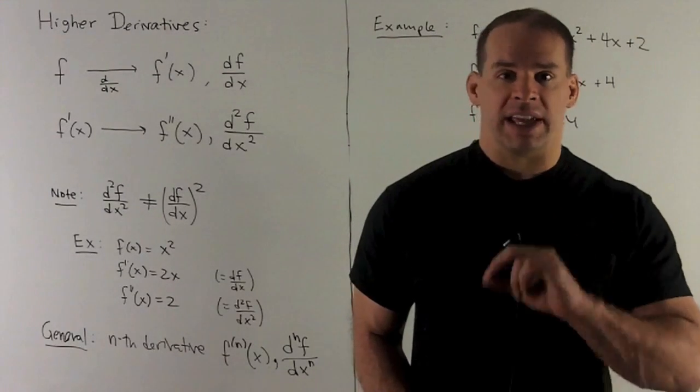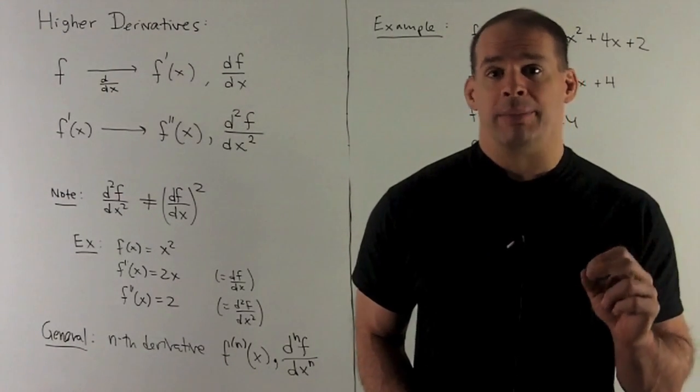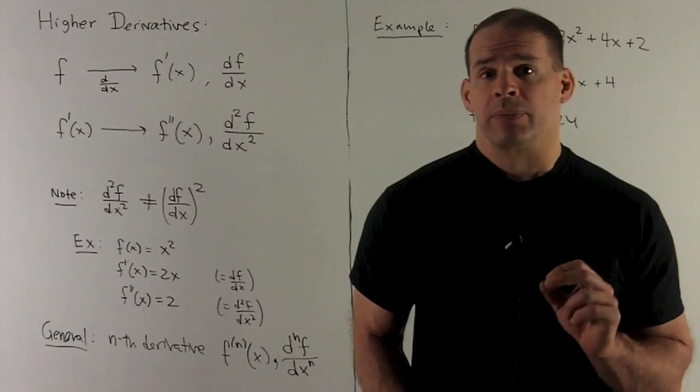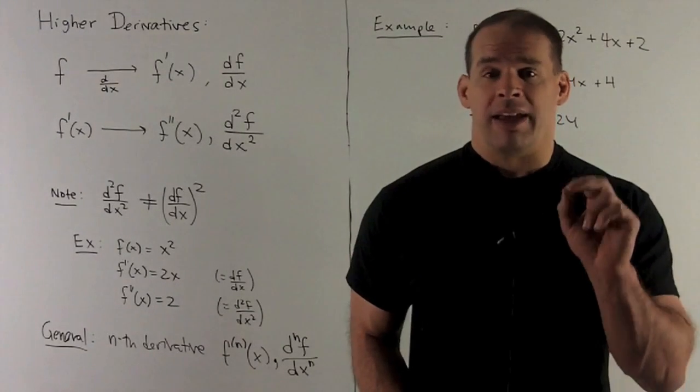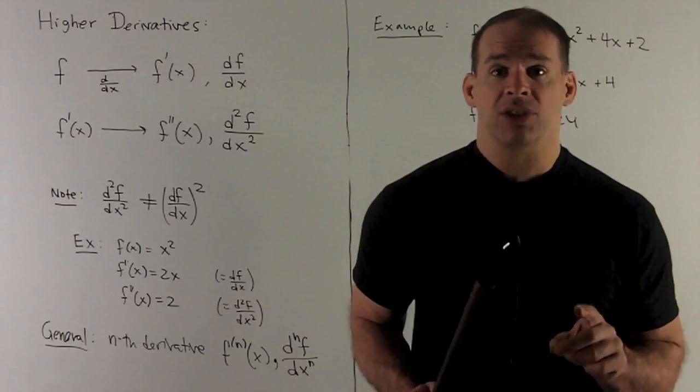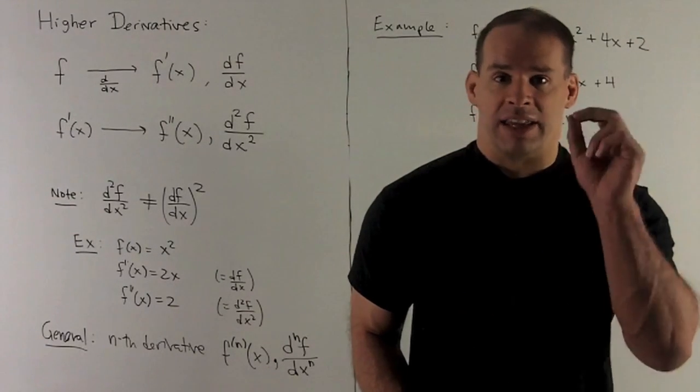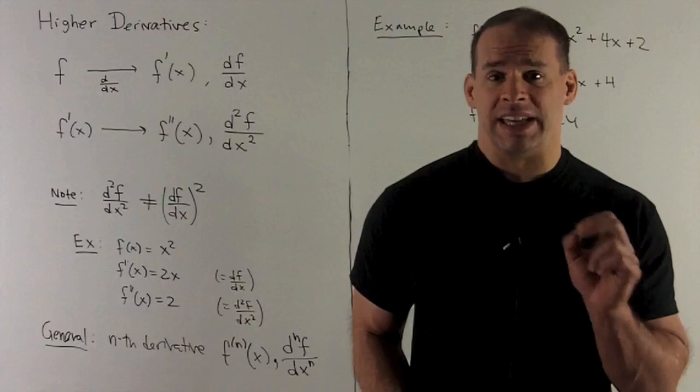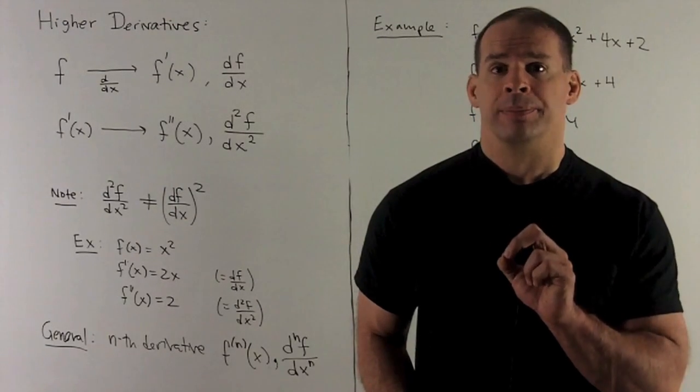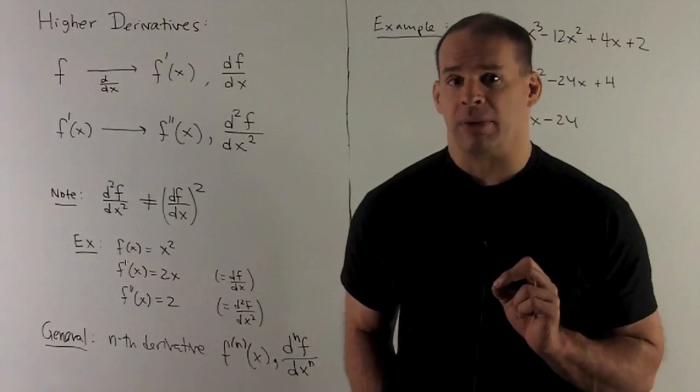In general, if I take n derivatives, we're going to call that the nth derivative of f. That's notationally going to be f parentheses n superscript of x. Or in the Leibniz notation, d to the nth power of f over dx raised to the n. Let's look at a concrete example for this.